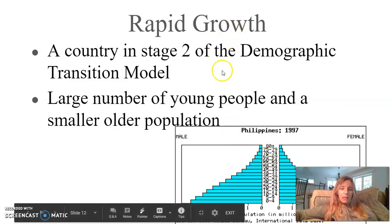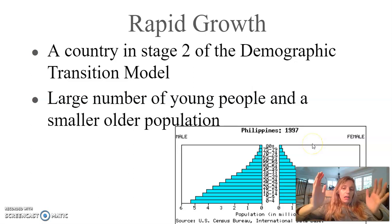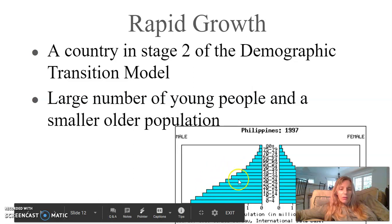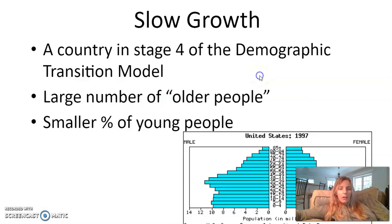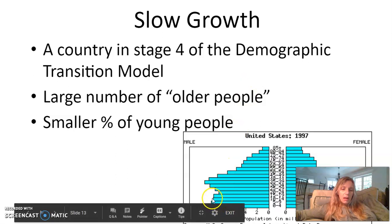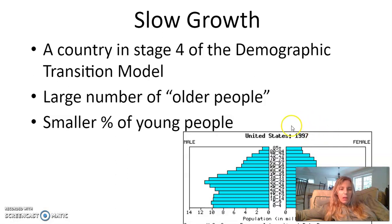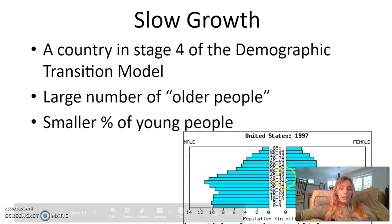For rapid growth, here's the Philippines — a stage two country — with a fat bottom, skinny middle, and skinny top representing a huge crude birth rate, high natural increase rate, low life expectancy, a large young population, and a really high youth dependency ratio. For slow growth, like the United States, the pyramid barely bumps out at the bottom — a stage four country — with a large older population and a high older dependency ratio.